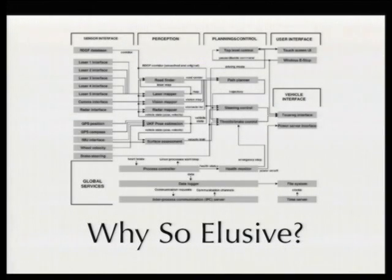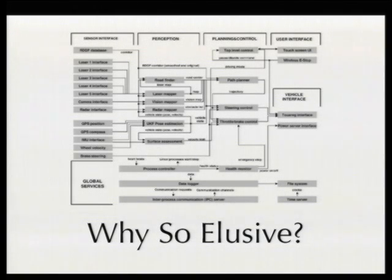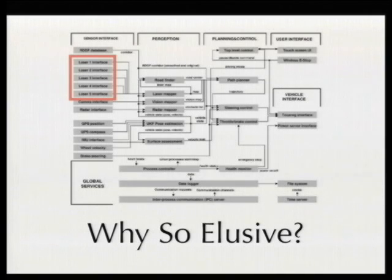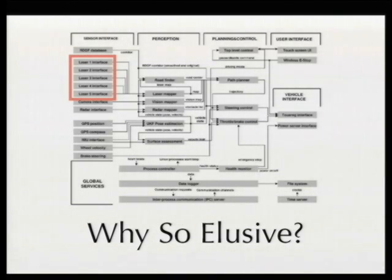Why did it take so long? Here's the hand-drawn dependency diagram of Stanley's components — all the stuff in the vehicle. The lasers are up in one corner as a source, and the output is far downstream with many connections between components. They had to start at the swerving behavior and work backwards through the components, and there were so many possibilities and so many ways this could have gone wrong that it just took a long time to narrow down and home in on the problem.